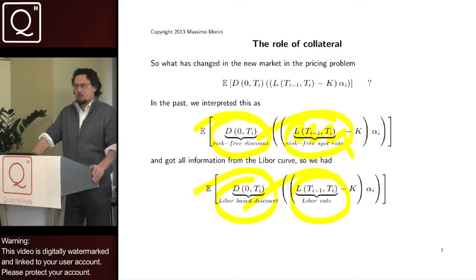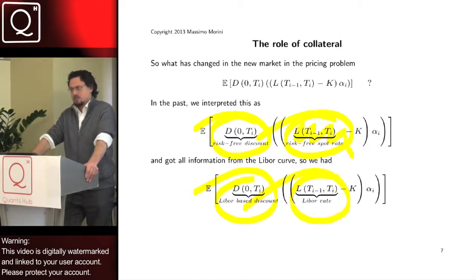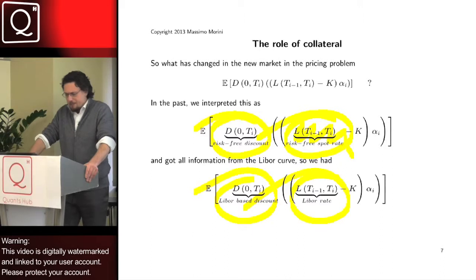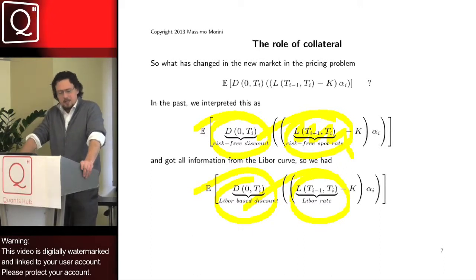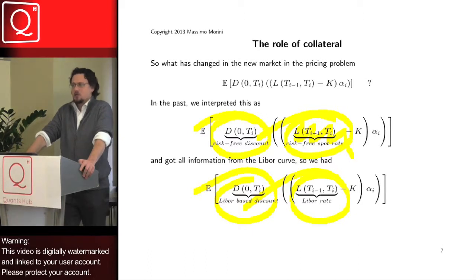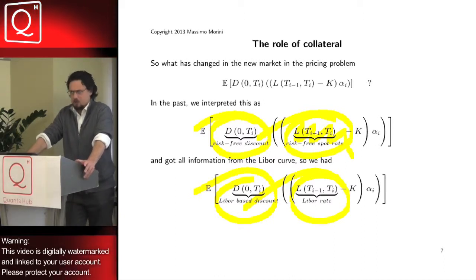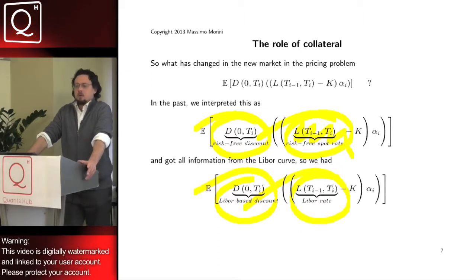You may say, that's surprising, because you are telling us that what has changed in the pricing problem is the underlying and not the discounting. But I remember, back in 2008, that everyone in the market was speaking about that we had to change the discounting and moving to an OIS discounting. And no one spoke about changing the underlying. Come on, the underlying is written in the contract.